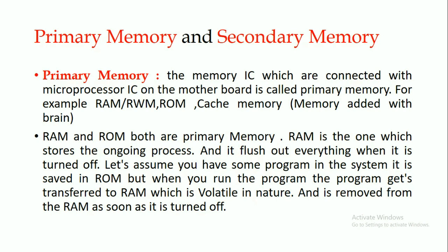RAM is the one which stores the ongoing process and it flushes out everything when it is turned off. Let's assume you have some program in the system — it is saved in ROM. But when you run the program, the program gets transferred to random access memory, which is volatile in nature and is removed from the RAM as soon as it is turned off.